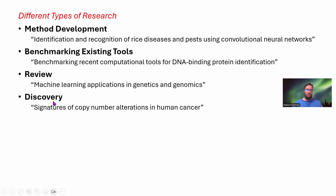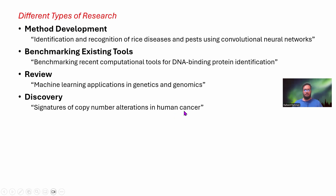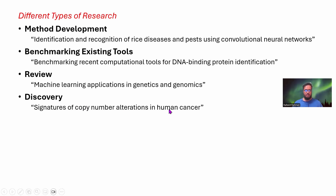Then you have the discovery type of paper. Basically you discover something which people haven't really seen or thought of and you present that as a paper. For example, 'Signatures of Copy Number Alterations in Human Cancer' — this paper discovered some signatures of copy number alterations in human cancer which people can later use to develop methods or do other things. This kind of paper also has experiments and validation of whatever discovery they are claiming.